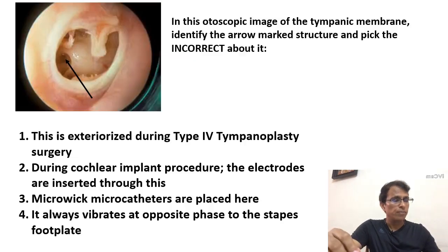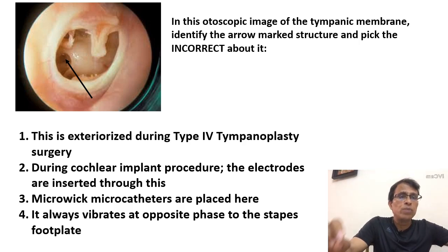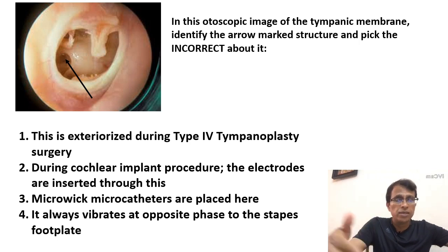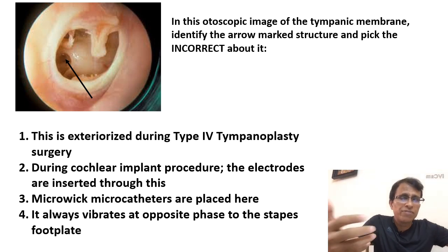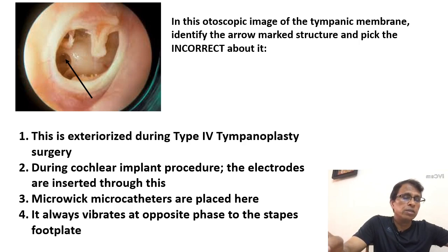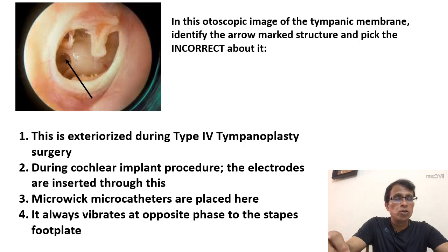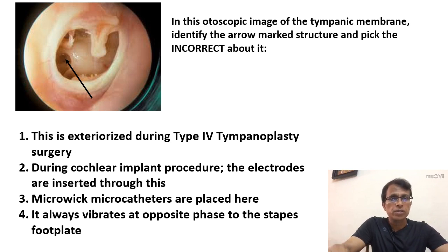Now we go to the second question. In this otoscopic image of the tympanic membrane, identify the arrow-marked structure and pick the incorrect answer. You have to be able to identify the structure first. In the image you can make out it's a tympanic membrane with a large perforation. The identified structure is the round window. Also visible is the stapes in the oval window area, the tendon of the stapedius muscle, the handle of the malleus, the promontory, and the annulus.